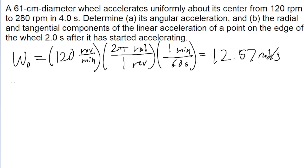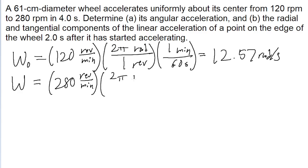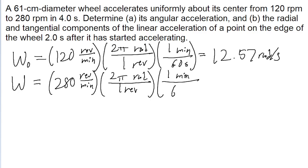Now the final angular speed is omega, which is given as 280 revolutions per minute. We'll use the exact same method to convert this into radians per second — multiply by 2 pi to convert from revolutions into radians, then divide by 60 to convert from minutes into seconds. This gives us a final angular speed of 29.32 radians per second.